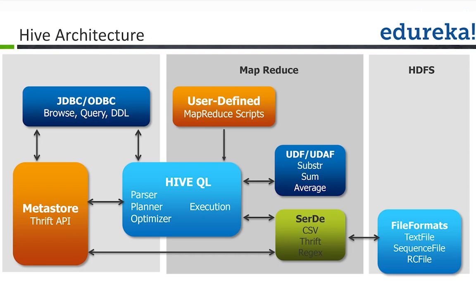What you have in Hive is something called the metastore. Whenever you create a Hive table, create a database, or create a view, all those definitions about the dataset — the database you created, the table you created — will be stored inside the metastore. On top of this metastore, you have a Thrift API running that enables you to do queries with the help of JDBC and ODBC connectivity. All table definitions, column definitions, and database definitions will be stored in the metastore.